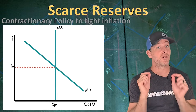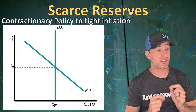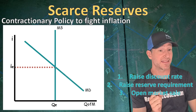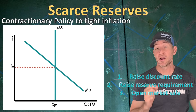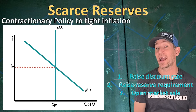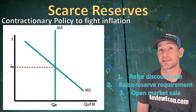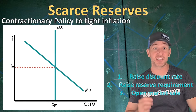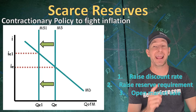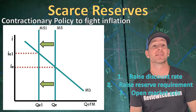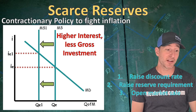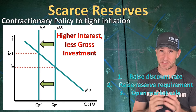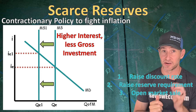If the central bank is looking to fight inflation, they will use contractionary monetary policy. That includes raising the discount rate, raising the reserve requirement, or having an open market sale of government bonds. Any of those policy actions will decrease the money supply and increase the nominal interest rate. That higher interest rate means less gross investment, which we'll connect to the AS-AD model in a moment.